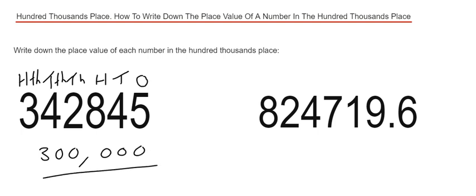So let's have a look at our second example. We've got 824,719.6. We've got to be careful here because we've got a decimal number, so we count six places from the decimal point this time.